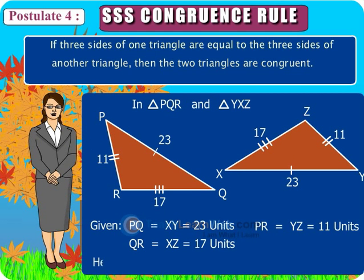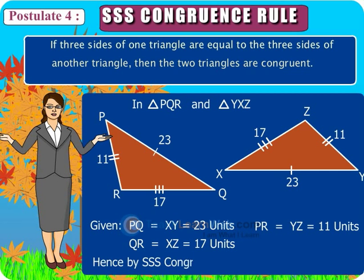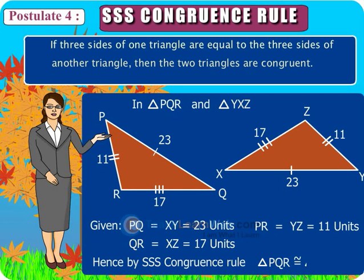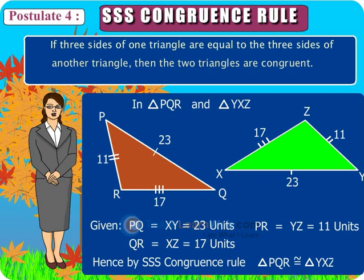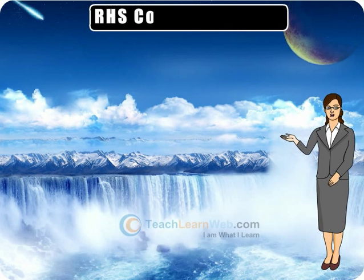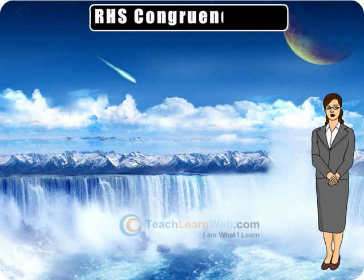Hence, by SSS congruence rule, triangle PQR is congruent to triangle YXZ. Postulate 5: RHS congruence rule.